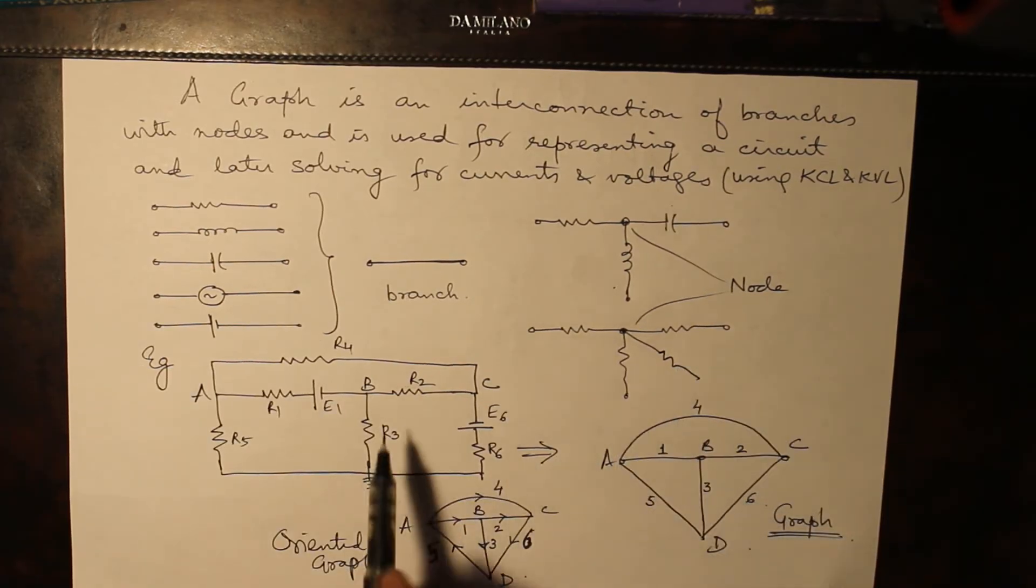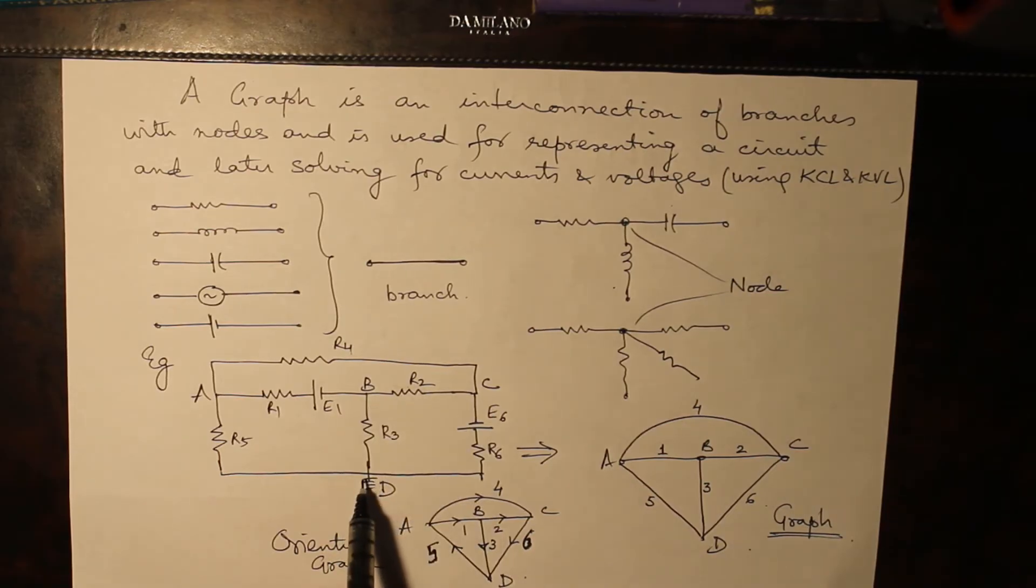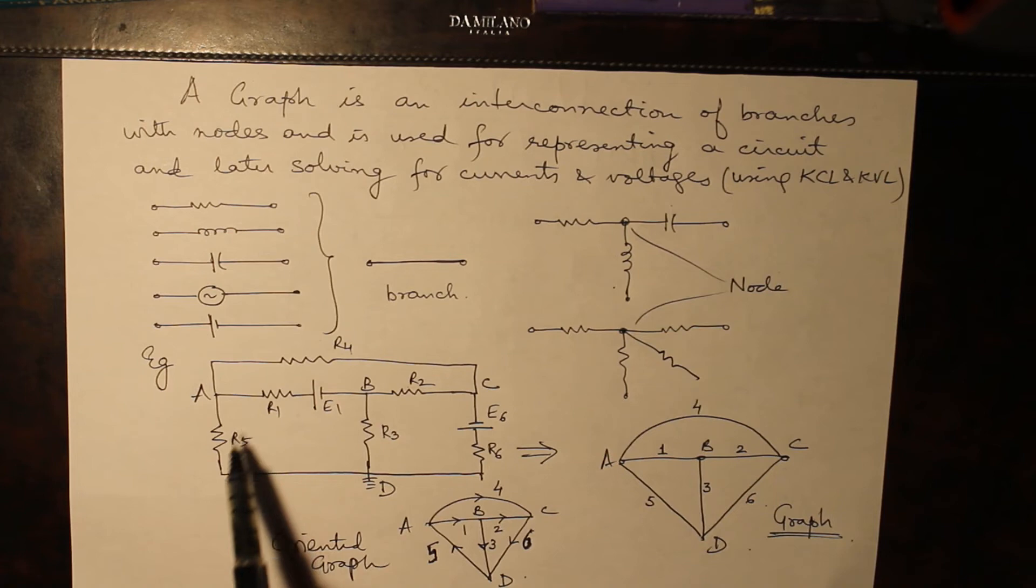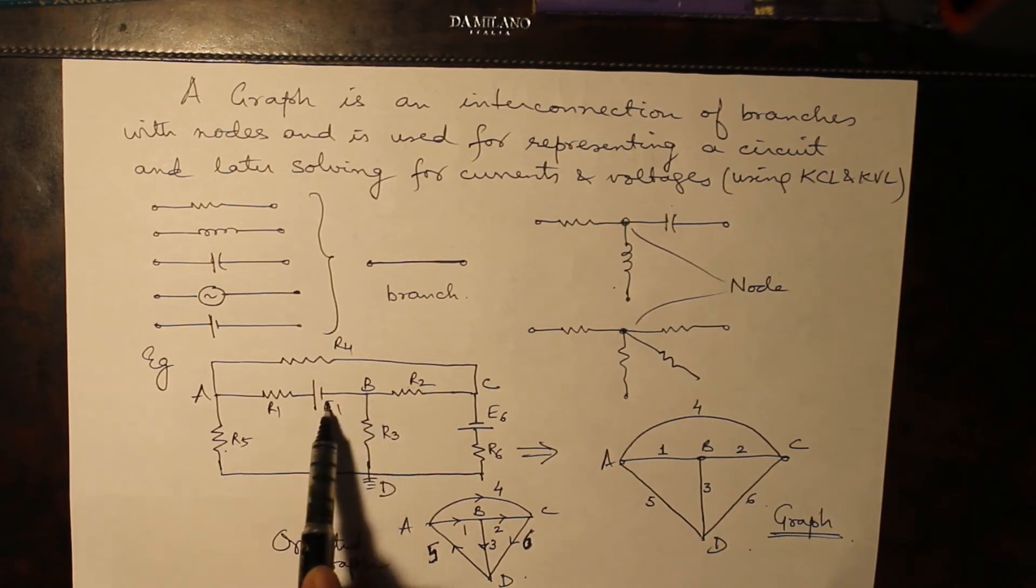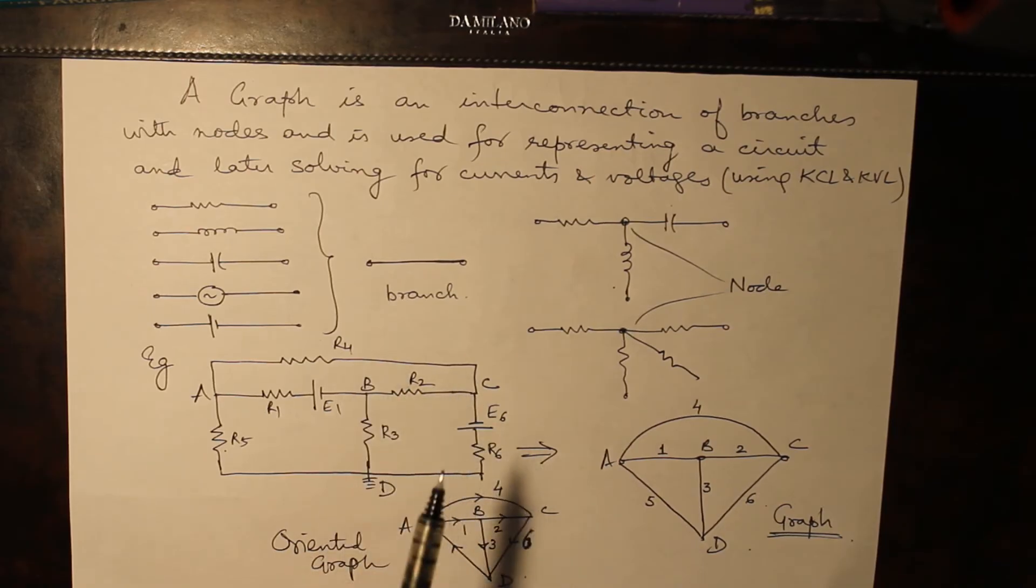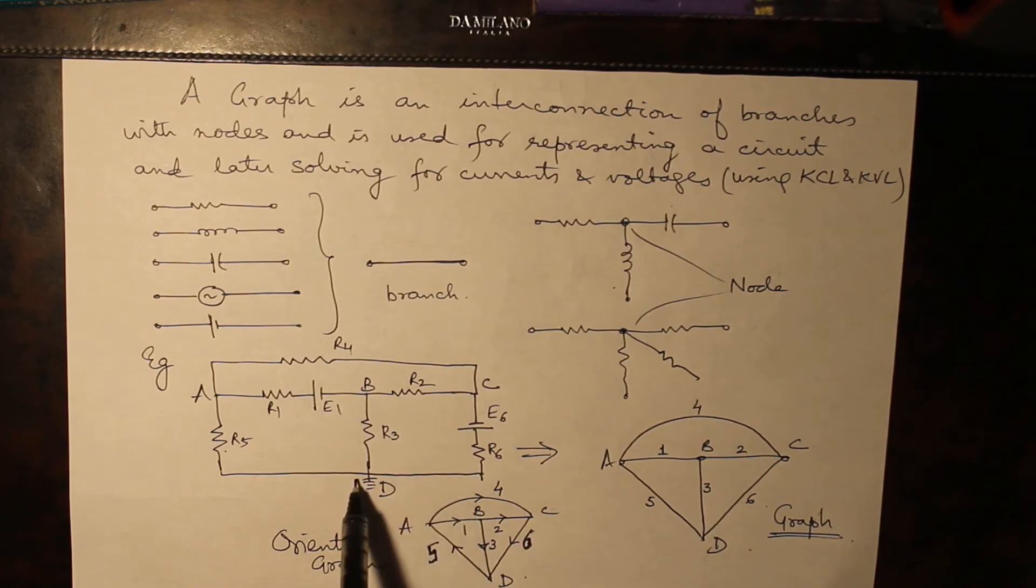Now let's see, this is a circuit in which A, B, C, D are the nodes. Because we can see A is connected to R4, R1 and R5. B is connected to E1, R2 and R3. C is connected to R2, R4 and R6. And D is connected to R3, R5 and R6.